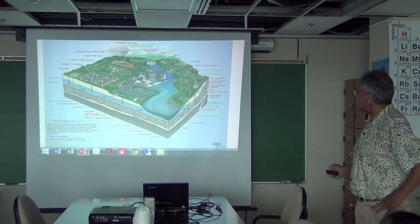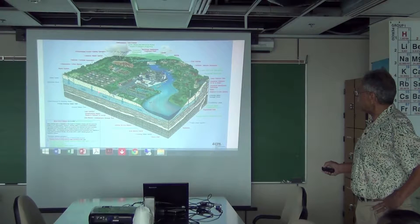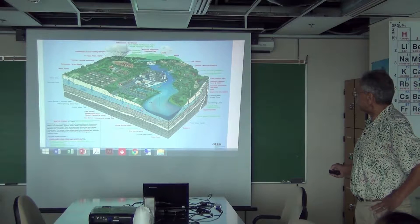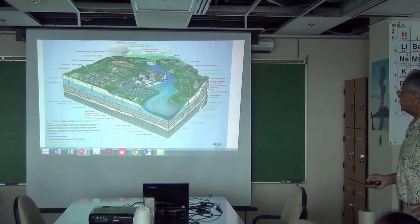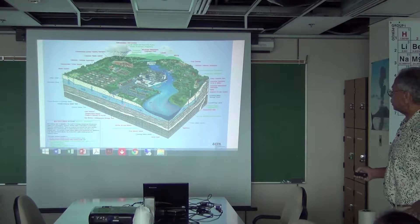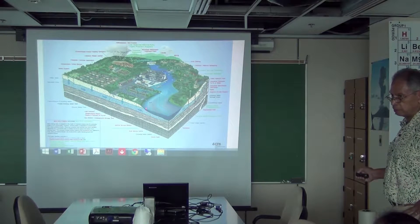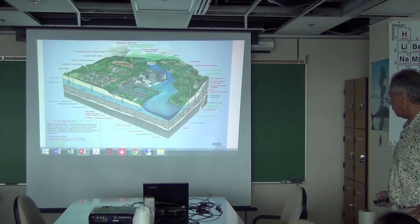We call this one an unconfined aquifer. Basically, the recharge is from the local surface — that's the one here. The black line is the water table. You can see wells that can go into this part of the unconfined system, and this is directly connected to the stream. The blue shows the water direction — the arrows indicate the direction of flow.